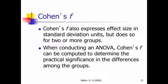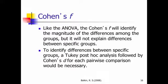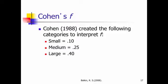Cohen's F also expresses effect size in standard deviation units, but does so for two or more groups. Like an ANOVA, a Cohen's F will identify the magnitude differences among the groups, but it will not explain the differences between the specific groups. To do that, you still have to do a Tukey post hoc and follow up by a Cohen's D for each pairwise comparison. For Cohen's F, the values for the categories are a little different. 0.1 for a small effect size, 0.25 for a medium effect size, and 0.4 for a large effect size.